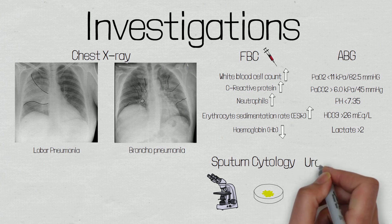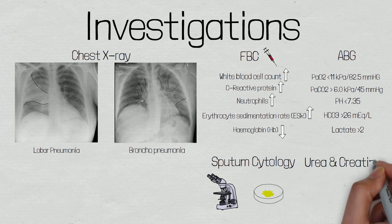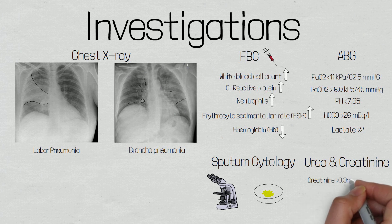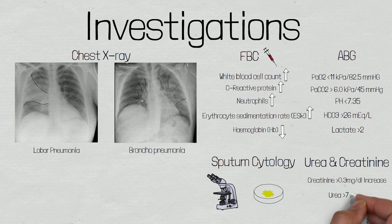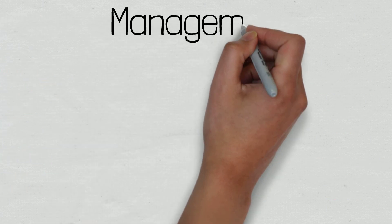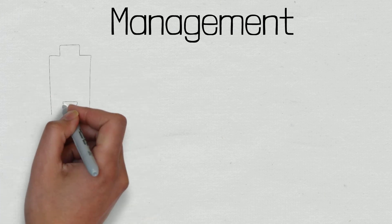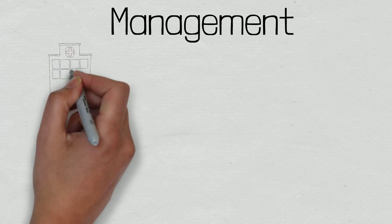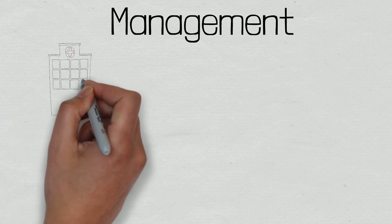Finally, we can measure urea and creatinine, which may be elevated if the patient is dehydrated or if the patient is going into an acute kidney injury as a result of the infection. Now that we've looked at the signs and symptoms, the physical examination and other investigations that can be conducted, let's talk about the management of these patients. The early recognition and management of pneumonia is important to stop the illness from progressing and to ensure that patients are put on the best care pathway.